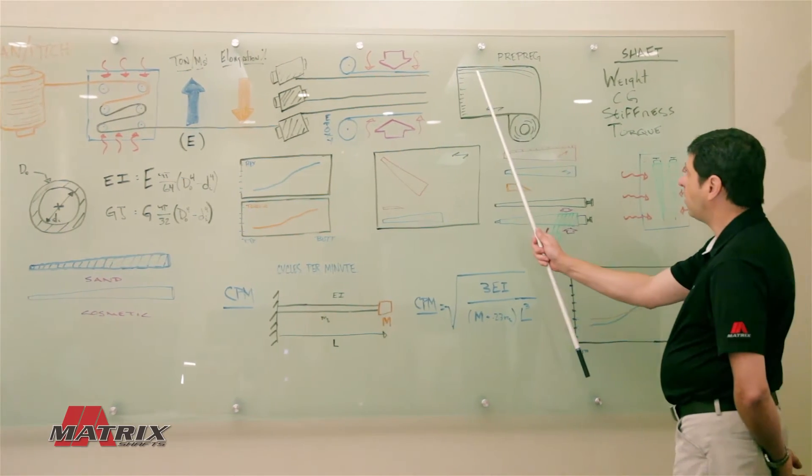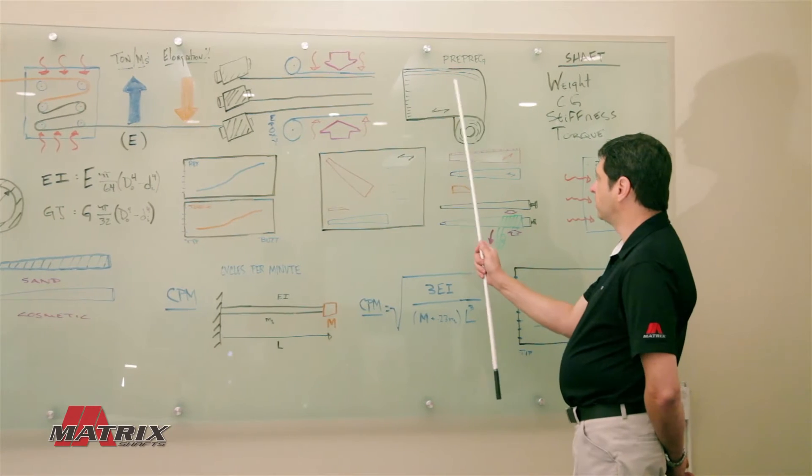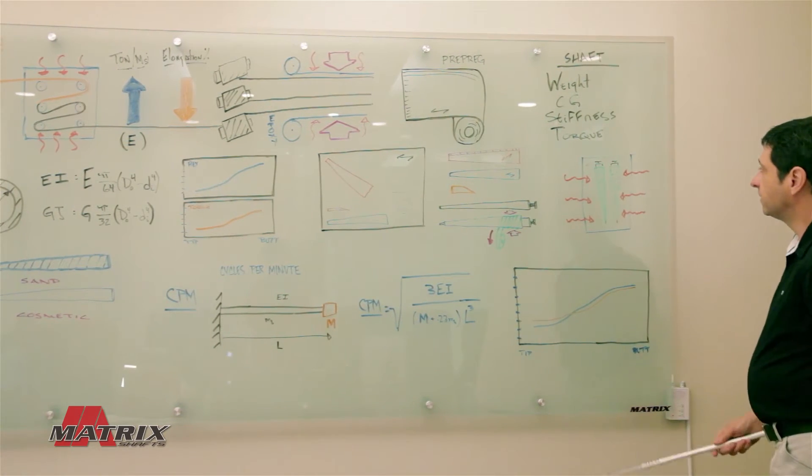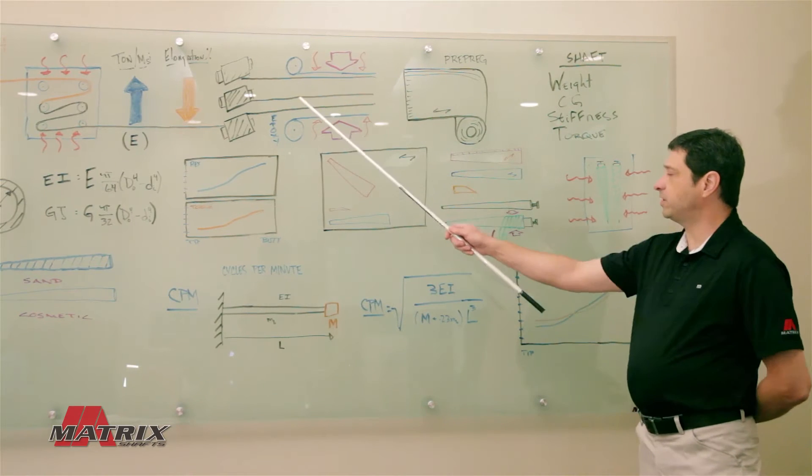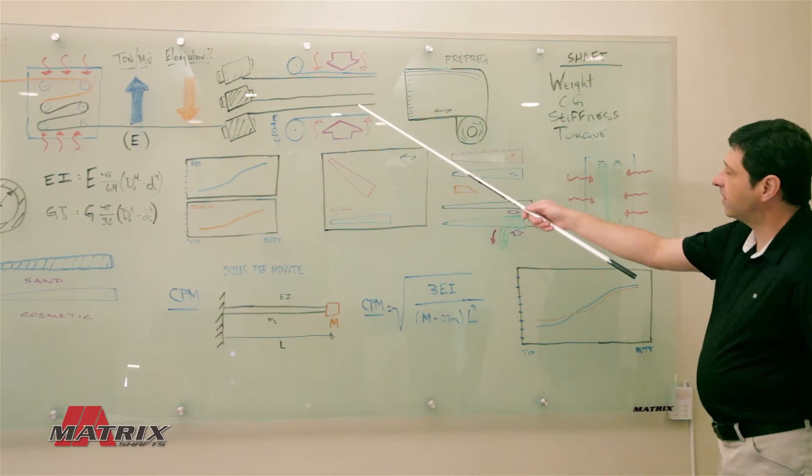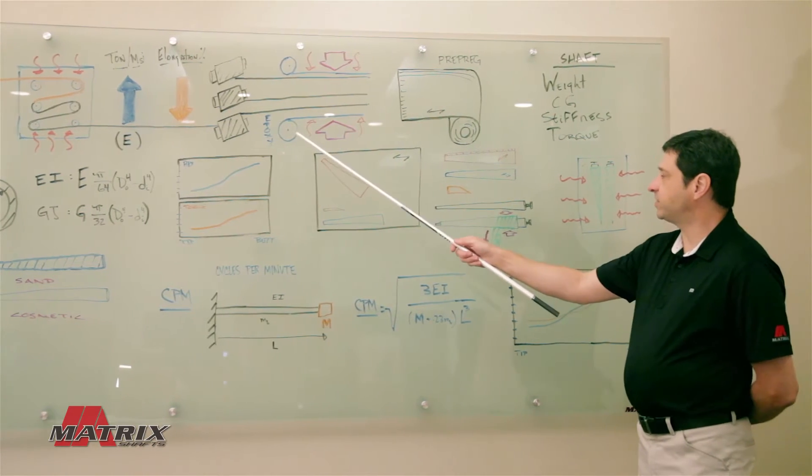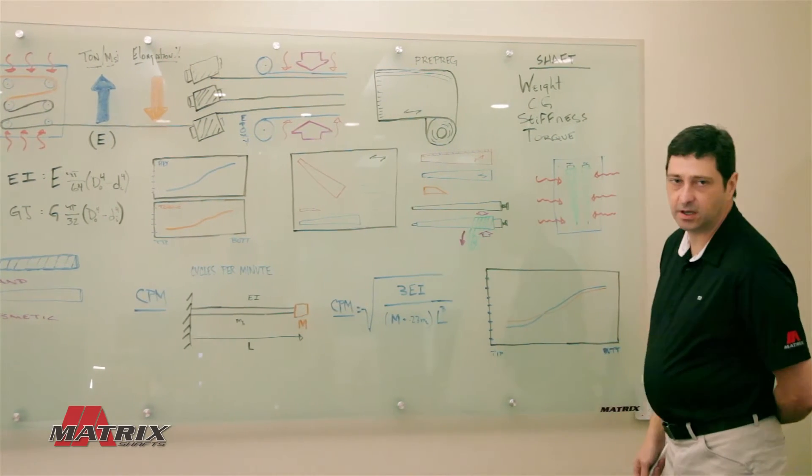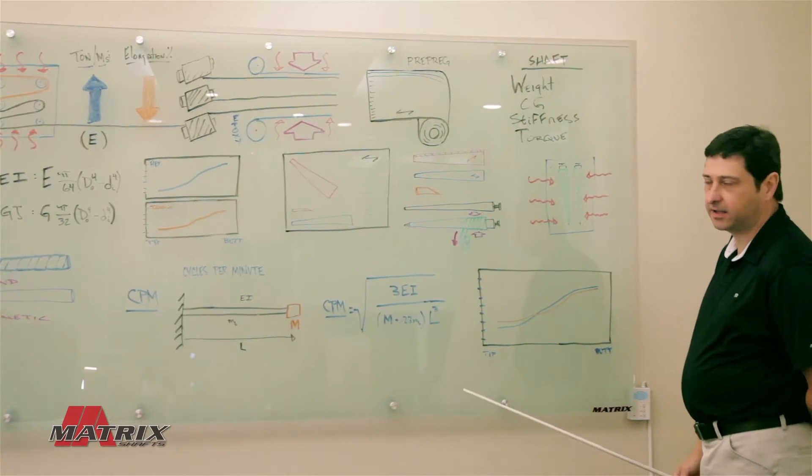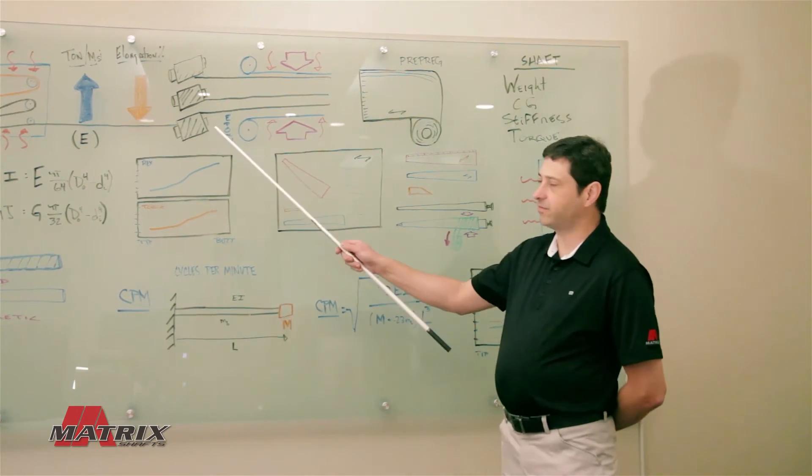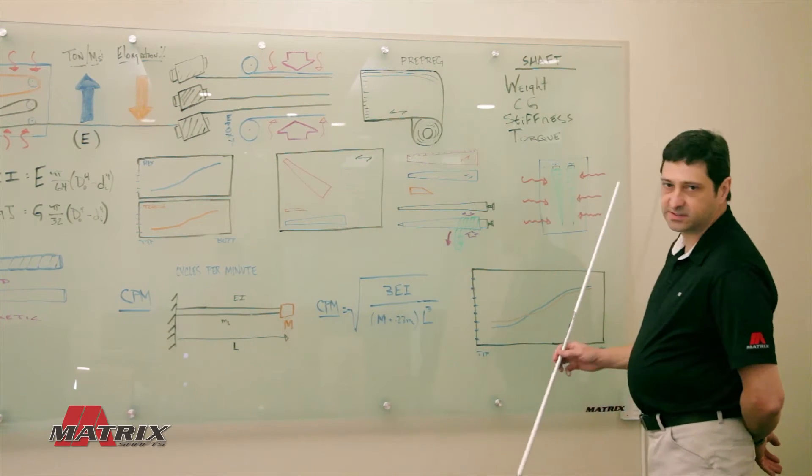All the carbon fibers on this prepreg are running in the longitudinal direction. Now, by varying how many spools of material we use, we can change the area weight. By changing the thickness of the epoxy, we change the resin content. And those are all things that we'll use, along with the different fiber types, to design a shaft.